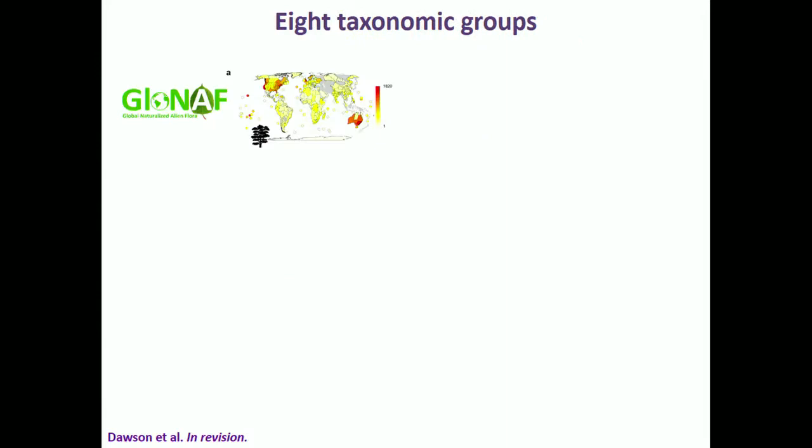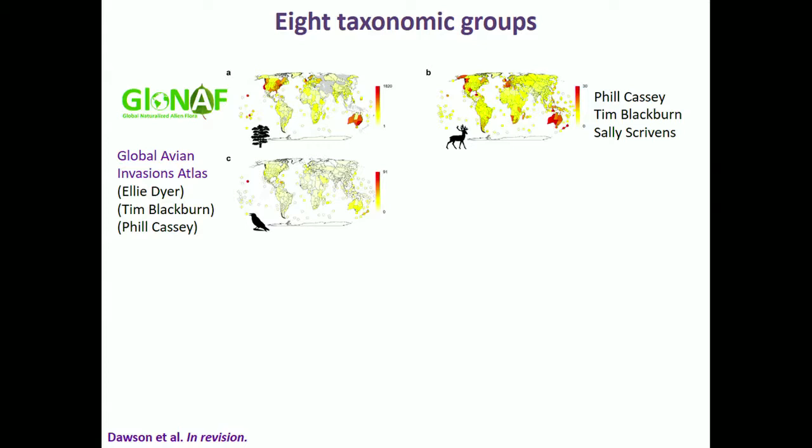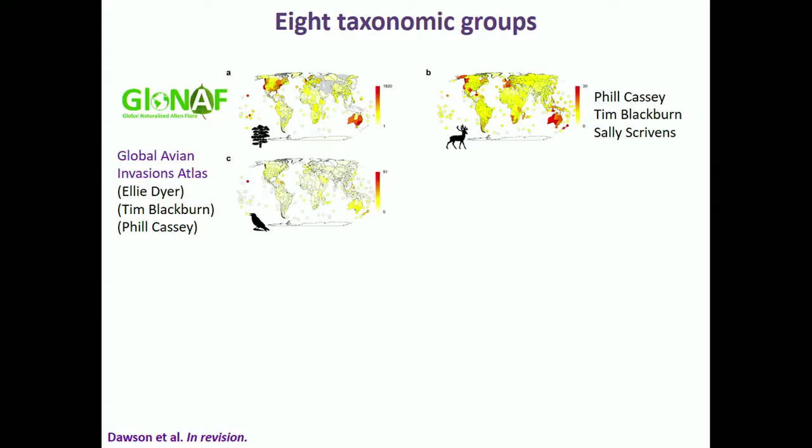The taxonomic groups I've been looking at include plants, using our GLONAF database; mammals, with data from co-authors Phil Cassey, Tim Blackburn, and Sally Scribbins; and avian species — birds — from Tim Blackburn and Ellie Dyer's database.